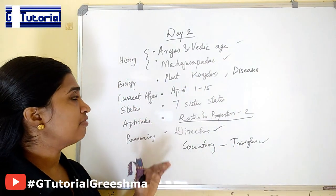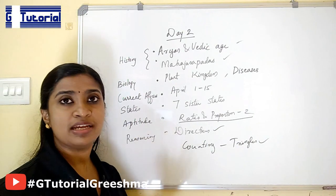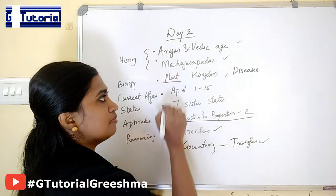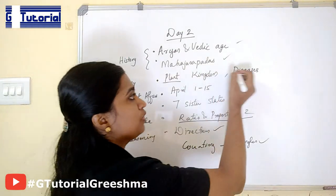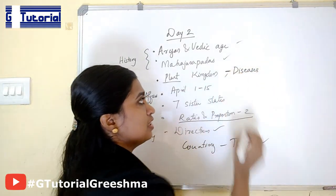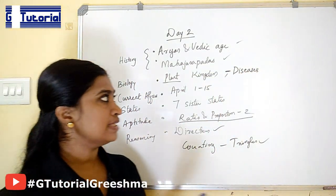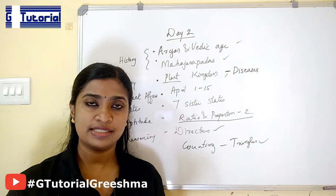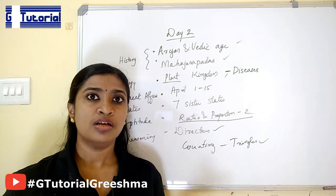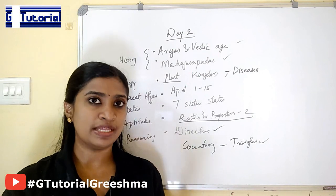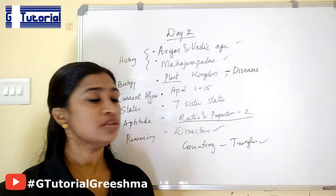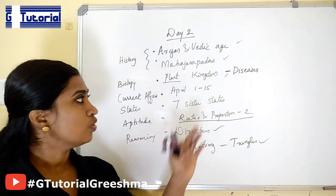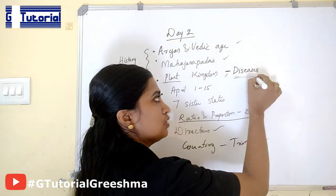Yesterday you studied animal kingdom; today go for the plant kingdom. Also study about diseases — different types of diseases, that is, different causing agents such as bacteria, virus, fungi, etc., and the diseases caused by them. It is very important. Such type of questions are asked in the exam, so this topic is very important.